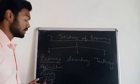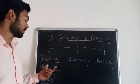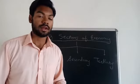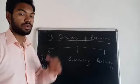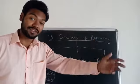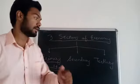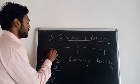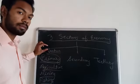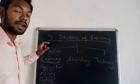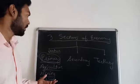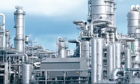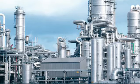The next primary sector activity is fishing. Fishing is also related to nature — we get fish from nature only. We go into oceans, seas, or rivers, catch fish, and sell them in markets. Basically, the primary sector deals with everything from nature: whatever we get from nature, we sell it and earn money from it.